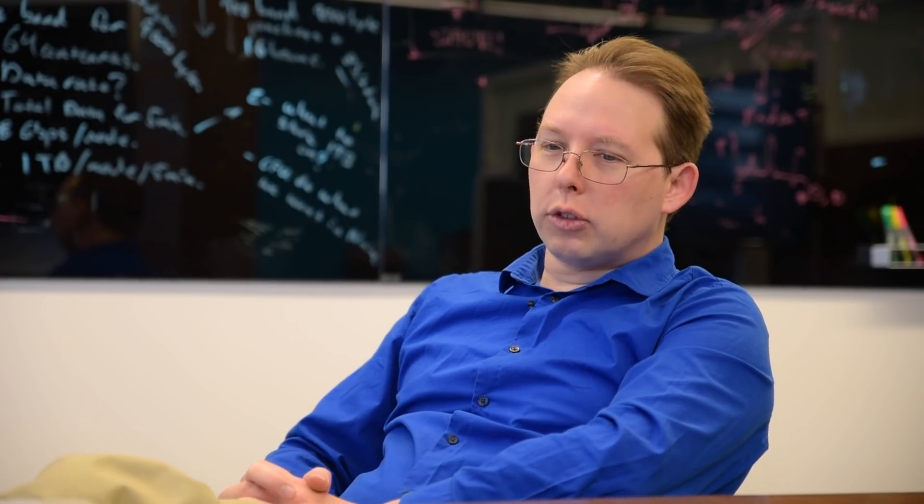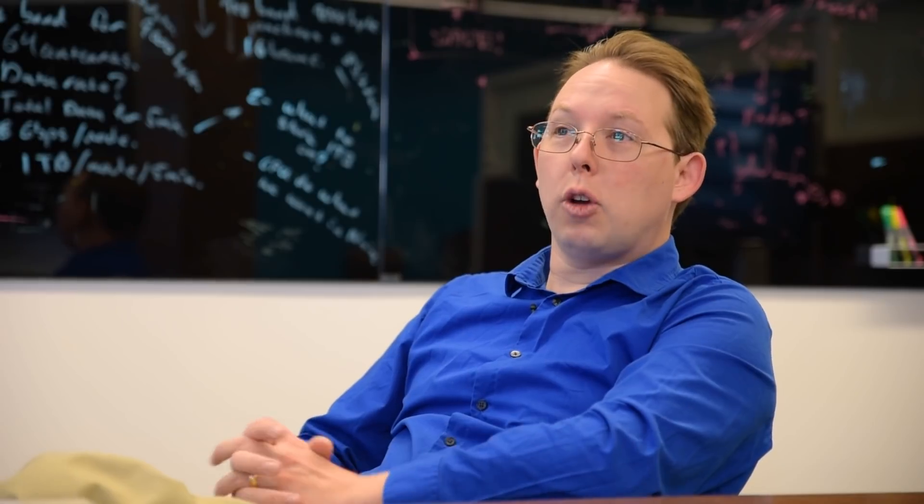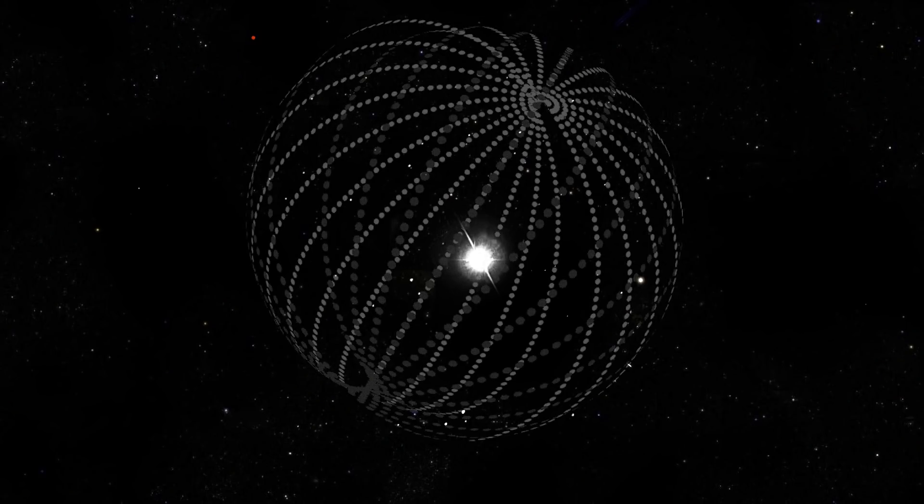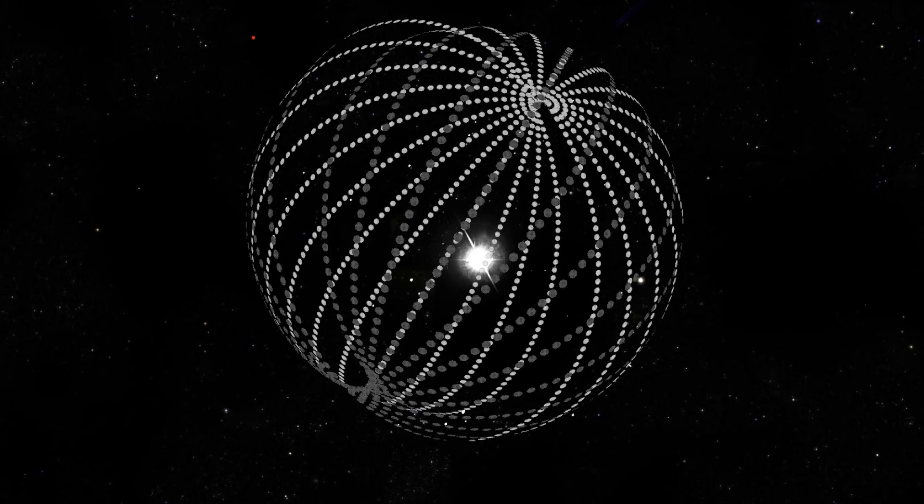So the most common descriptions of how you might go about detecting this are that if you give an alien civilization enough time, they might build very large structures. And the most obvious reason they might do that is to collect very large amounts of starlight.